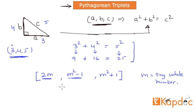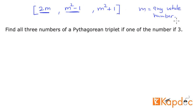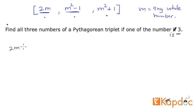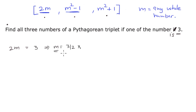Let's see how it works through some examples. The first example is: find all three numbers in a Pythagorean triplet if one of the numbers is 3. We know that in a Pythagorean triplet, if one number is 3, that means either 2m is 3, or m squared minus 1 is 3, or m squared plus 1 is 3. One of these three expressions will equal 3. Let's start with 2m and equate it to 3.